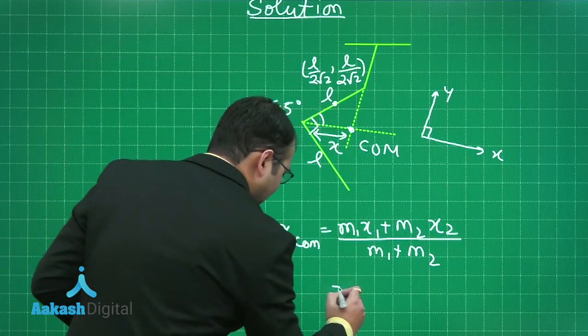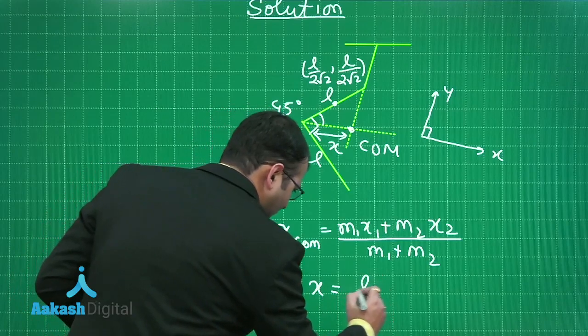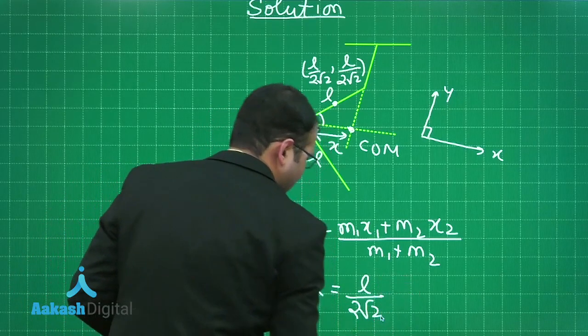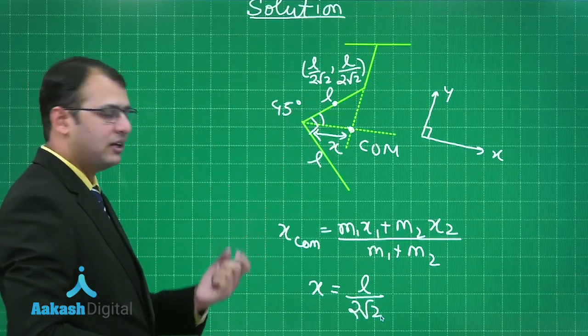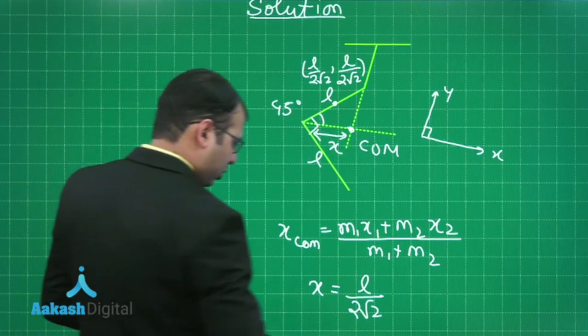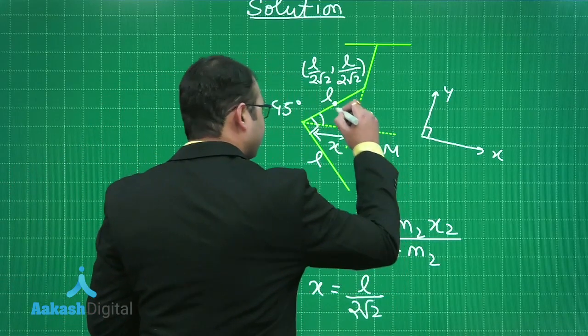When you put the values, you will find x will be equal to L/(2√2) meters. Now with this x, it's very easy to find the answer now because if you draw a perpendicular from here to here.